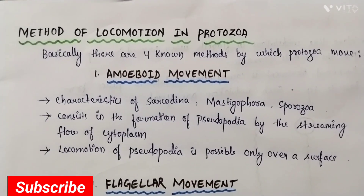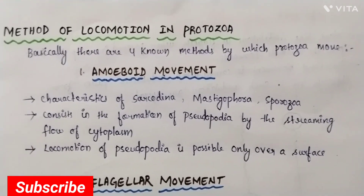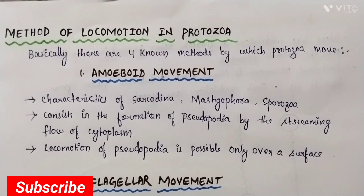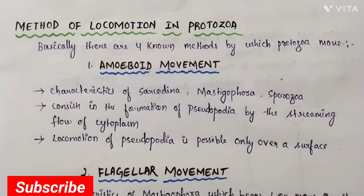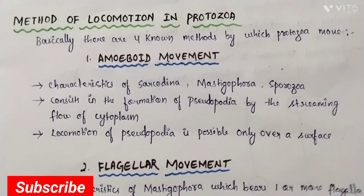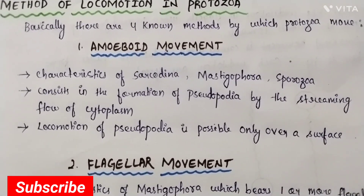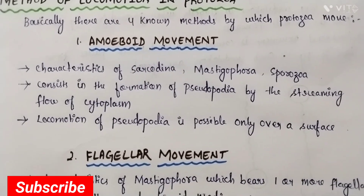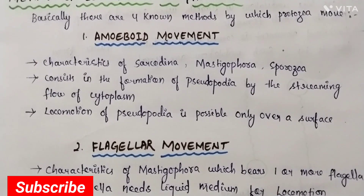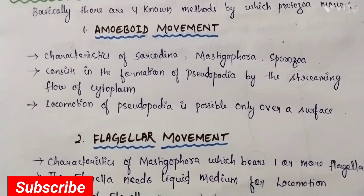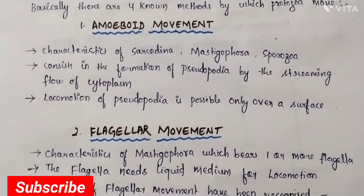Methods of locomotion in protozoa: basically, there are four known methods by which protozoans move. First, amoeboid movement, which is a characteristic of Sarcodina, Mastigophora, and Sporozoa. It consists in the formation of pseudopodia by the streaming flow of cytoplasm. Locomotion by pseudopodia is possible only over a surface.